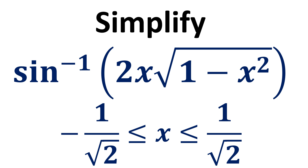In this video, we learn to simplify inverse sine of 2 times x times square root of 1 minus x squared. The value of x is greater than or equal to minus 1 over square root of 2 and less than or equal to 1 over square root of 2.